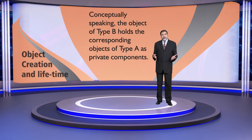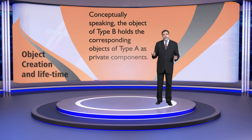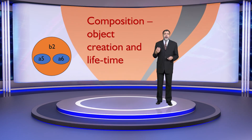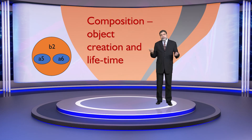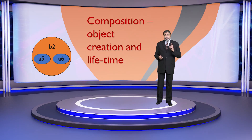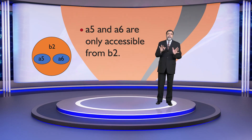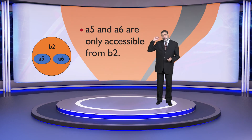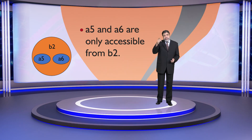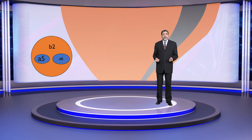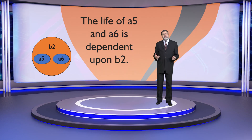Private components can be held exclusively. For example, when we have object B2, there are two objects A5 and A6, and they are private members. This means A5 and A6 are only accessible from B2 — this is exclusive holding. The life of A5 and A6 is dependent upon B2.